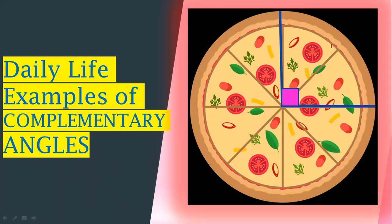Each slice of the pizza shows some degree of angle. When we add these two angles, it has been shown that they make 90 degrees. So these two angles are the complementary angles.